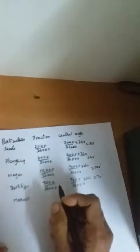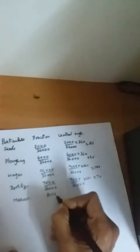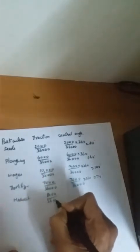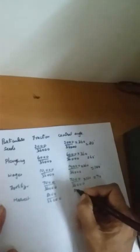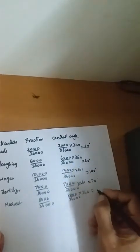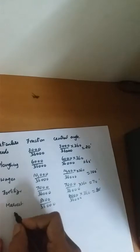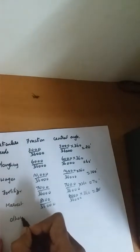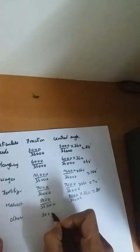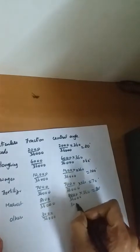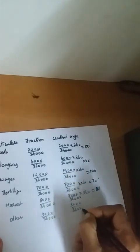The next category is 'Harvest'. Harvest is 8,000, so the fraction is 8,000 divided by 36,000, and the central angle is 8,000 divided by 36,000 into 360. Cancel the zeros — 8 tens are 80, so you get 80 degrees. The last category has 3,000, giving a fraction of 3,000 by 36,000, and cancelling gives 3 times 10 equals 30 degrees.